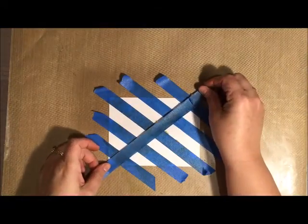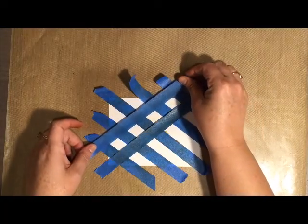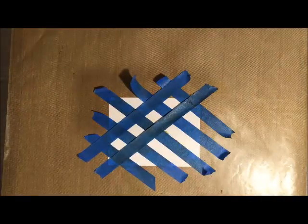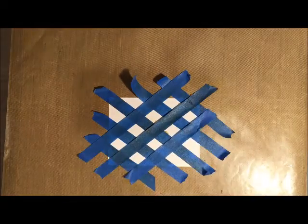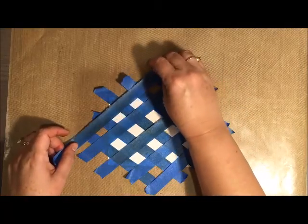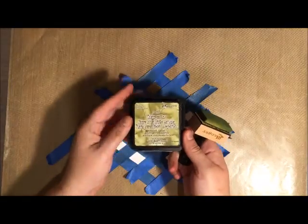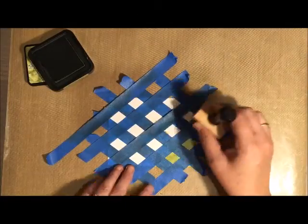For today's card, we'll be creating a checkered background using distress ink. The three colors we're going to be working with today are Mustard Seed, Spiced Marmalade, and Peeled Paint. To begin, you're going to want to start off with some white cardstock and some blue painter's tape.